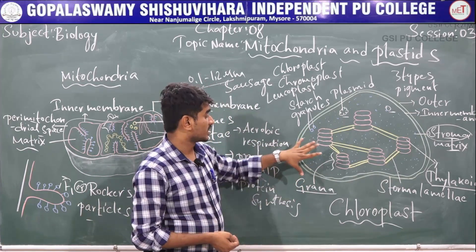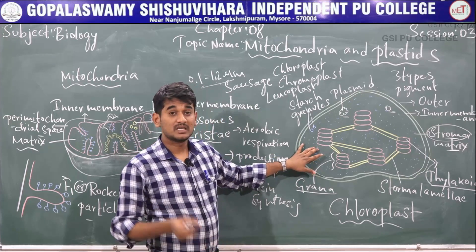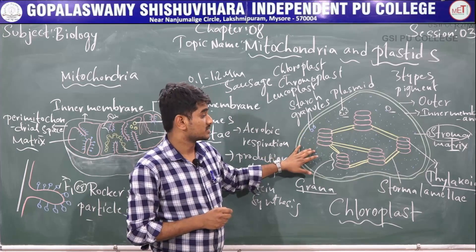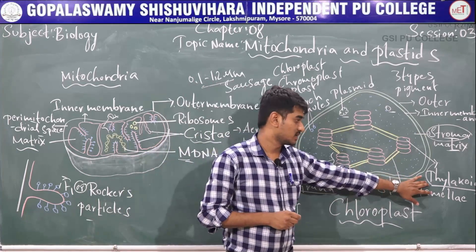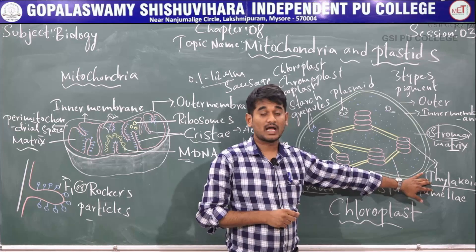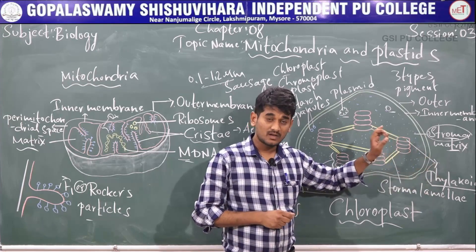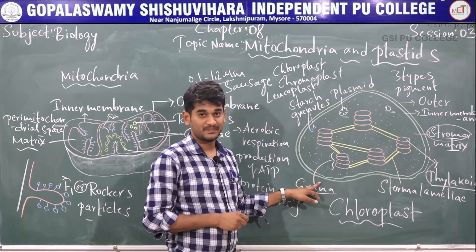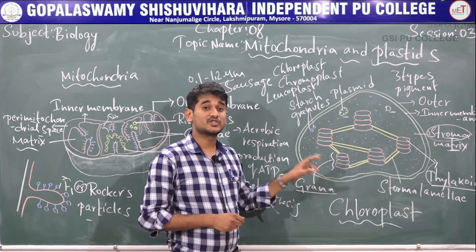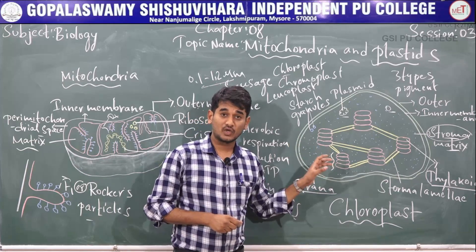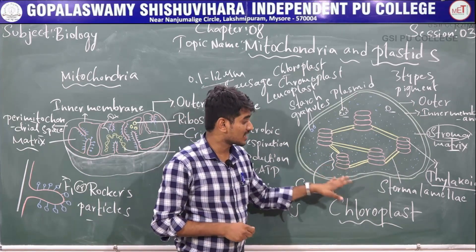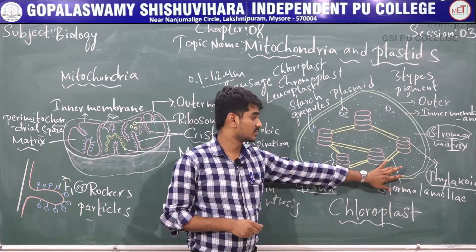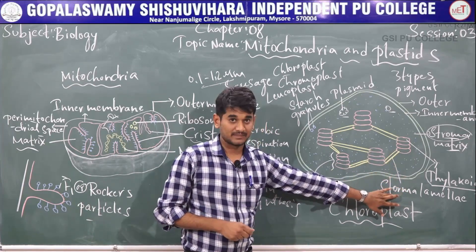Inside the chloroplast, there are flattened disc-shaped structures arranged one above the other called thylakoids. These thylakoids are arranged like a stack of coins, and such a stack is called grana. Nearly 40 to 60 grana are present in a chloroplast, which are interconnected by stroma lamellae.